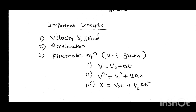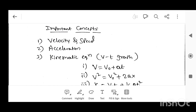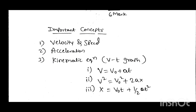There are mainly three kinematic equations. The first one is V = V₀ + AT, where V is the final velocity, V₀ is the initial velocity, A is the acceleration of a body, and T is the time interval. The second one is V² = V₀² + 2AX, where V is the final velocity, V₀ is the initial velocity, A is the acceleration of a body, and X is the distance or displacement interval.